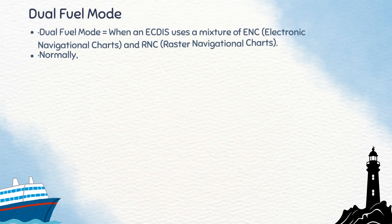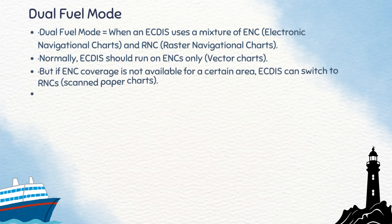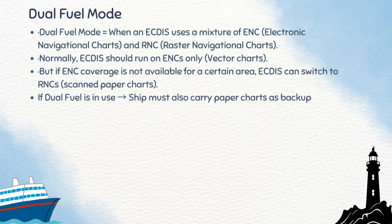Dual Fuel Mode: normally, ECDIS operates with ENCs — vector charts. But in areas where ENC coverage is not available, the system can switch to Raster Navigational Charts, which are scanned paper charts. This is called Dual Fuel Mode. Importantly, if a vessel is operating in Dual Fuel Mode, it must also carry a full set of paper charts as backup.